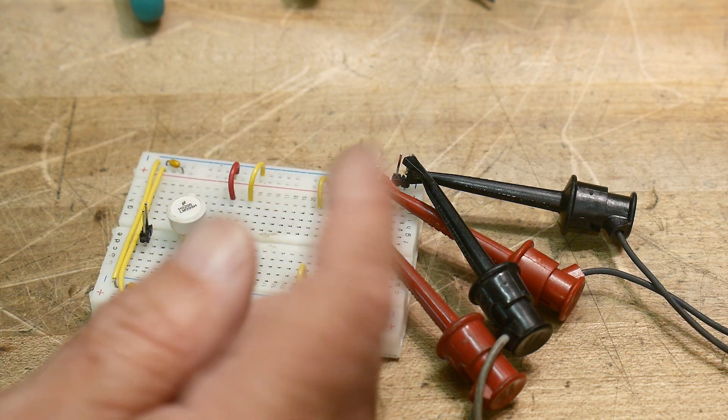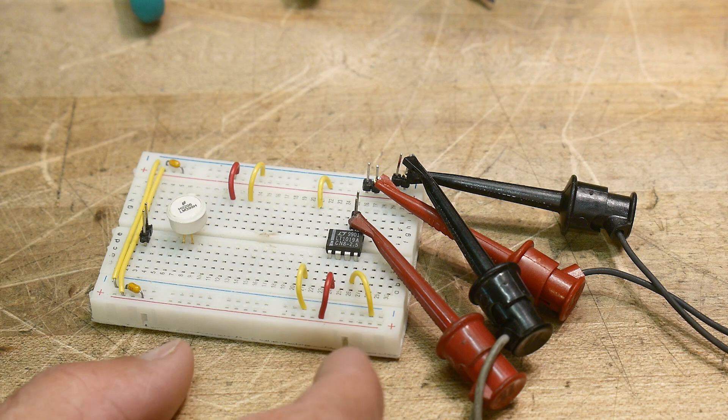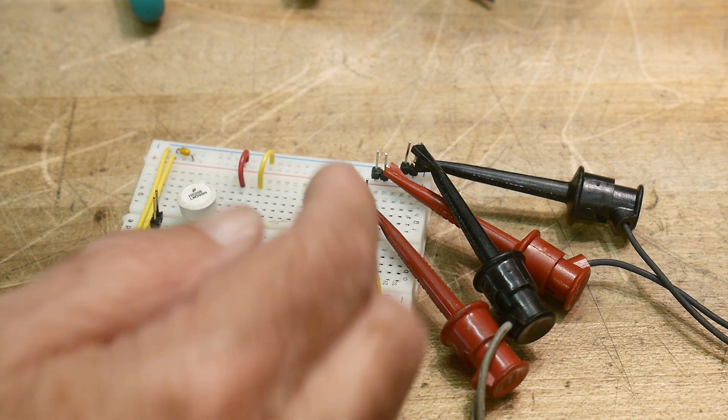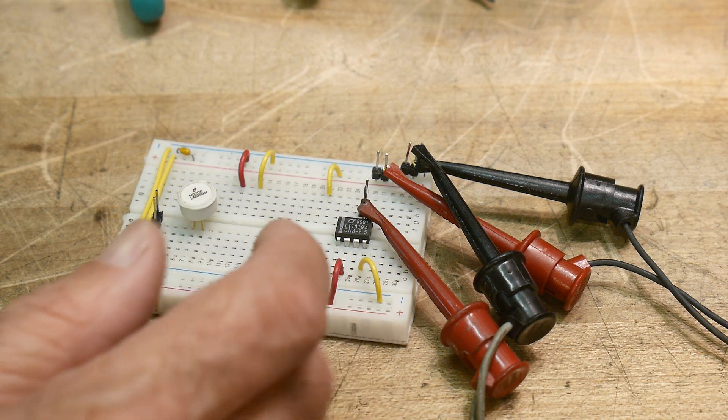But today we're going to show this one. And so I only have pins input, output, and ground. Those are the only pins I have connected on the part. And I have five volts going in and the part is labeled two and a half. And so let's go measure it with a fancy voltmeter.